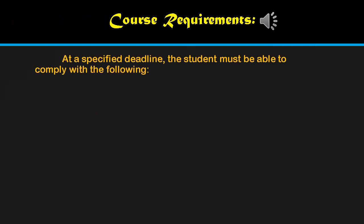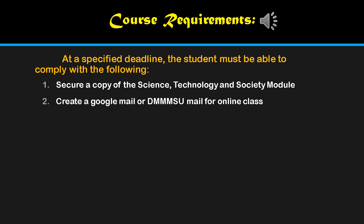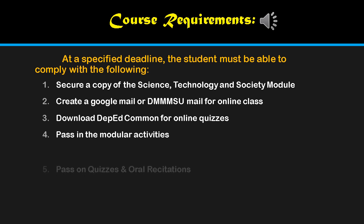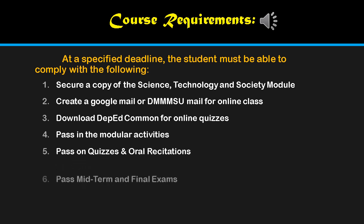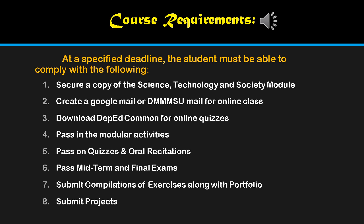For course requirements at the specified deadline, students must comply with the following: first, secure a copy of the Science, Technology, and Society module available from the department chairperson; second, create a Google Mail or DIMSU Mail for online class; third, download DepEd Common for online quizzes; fourth, pass the modular activities; fifth, pass quizzes and oral recitation in our group chat; sixth, pass midterm and final examinations; seventh, submit a compilation of exercises along with a portfolio; and lastly, comply with the course projects.